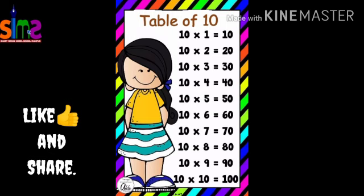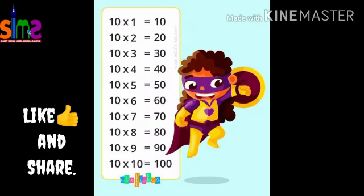Ten ones are ten, ten twos are twenty, ten threes are thirty, ten fours are forty, ten fives are fifty, ten sixes are sixty, ten sevens are seventy, ten eights are eighty, ten nines are ninety, ten tens are hundred. So kids, today in maths you all learned the table of ten. Thank you kids.